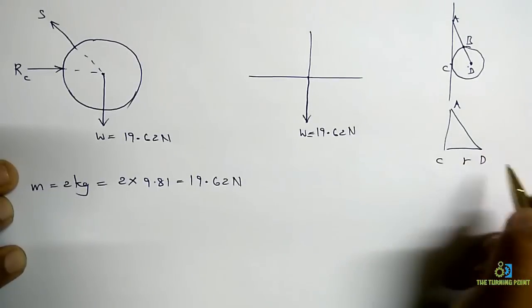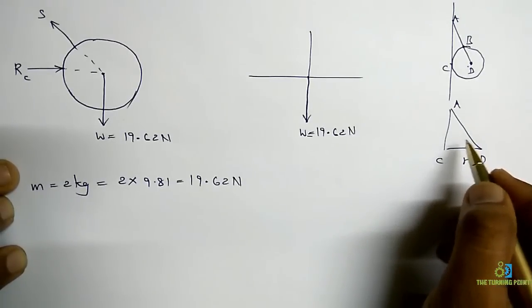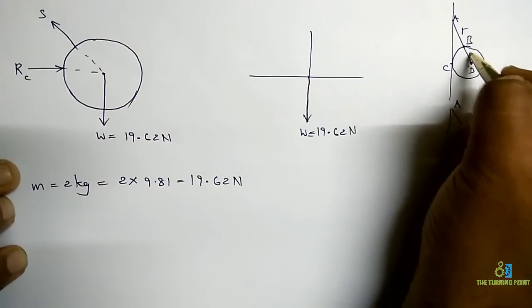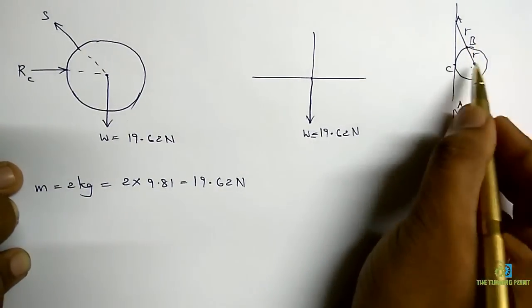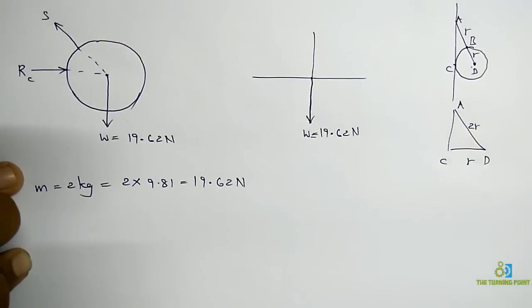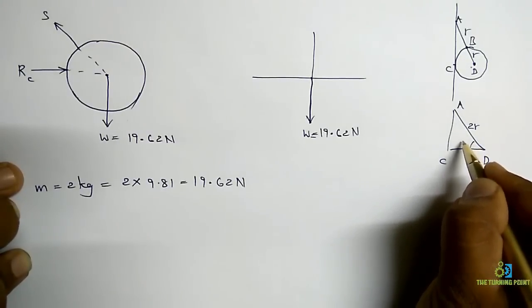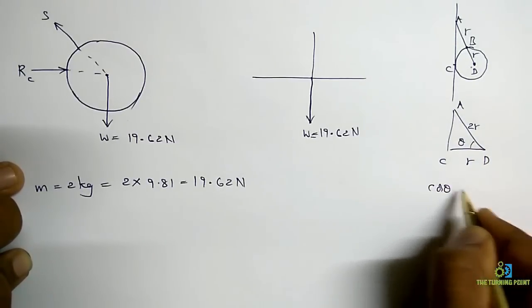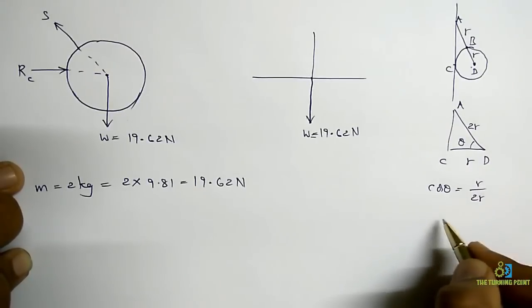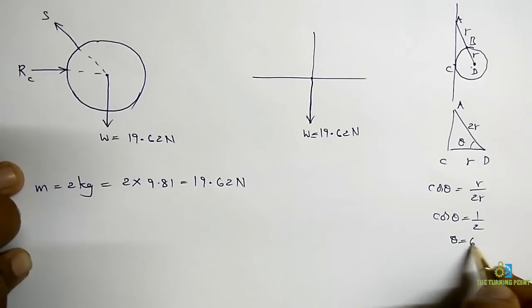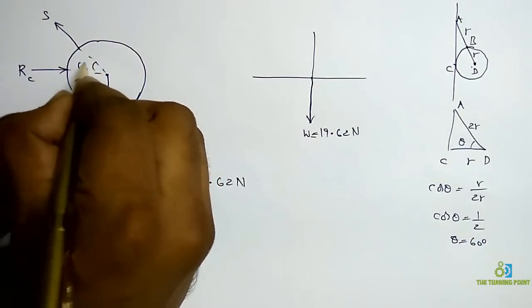You know C, D is nothing but radius. And the length of AB is given as, in the problem itself it is mentioned as R. Right. So this is R. You know this is R. So then total length R plus R will be 2R. So if you consider this one as theta. So from this cos theta is equal to R by 2R. From that cos theta equal to 1 by 2. From that theta equal to 60 degrees. So here the angle is 60 degrees.